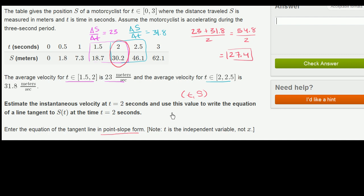Well, your change in s is going to be s minus 30.2 over your change in t, t minus 2, which equals your slope. Anywhere along that tangent line, you're going to have that slope, 27.4.